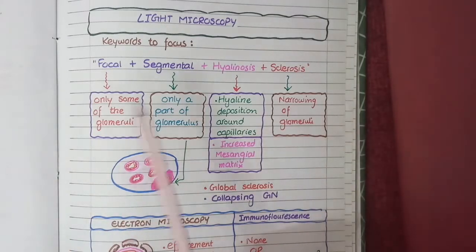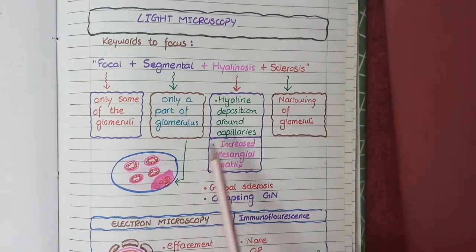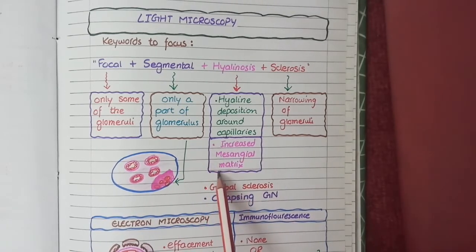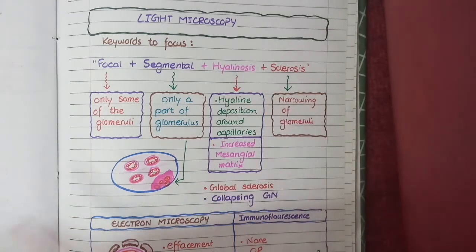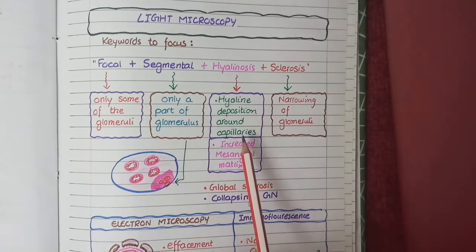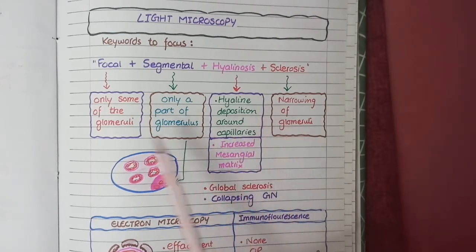'Hyaline nodules' represents deposition of hyaline material around the capillaries and an increase in mesangial matrix. 'Sclerosis' means that on microscopy you will see narrowed capillaries. Overall on microscopy, you see glomeruli affected by hyaline nodules and sclerosis in a focal and segmental pattern.